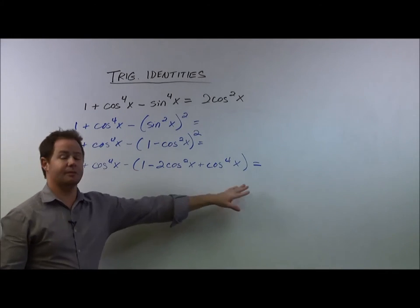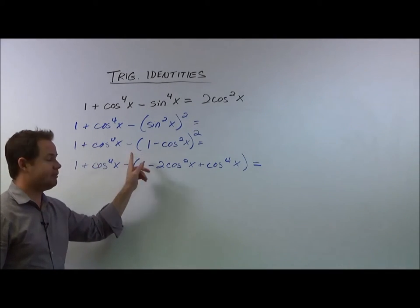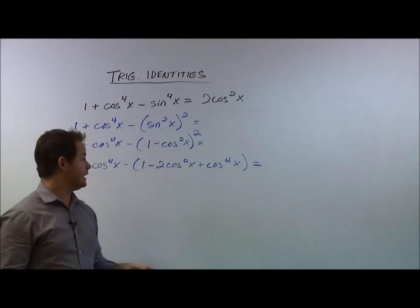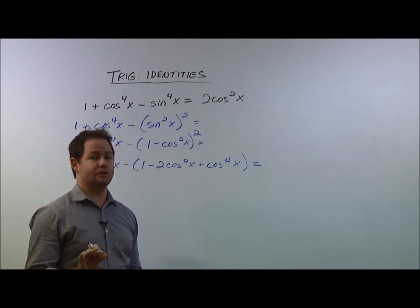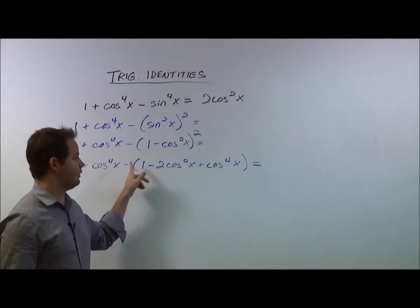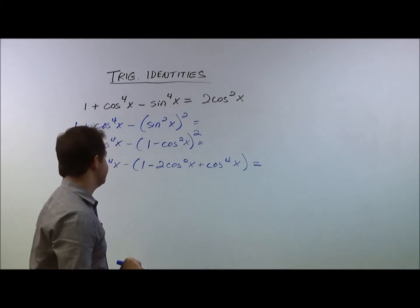Now if you notice, we kept the parentheses. And whenever you have a minus in front of an expression, even after you square a binomial like that, you really need to make sure you keep the parentheses because that negative will then distribute, and that's what we're going to do in this step here.